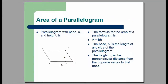The formula for the area of a parallelogram is A equals base times height, or A equals BH. The base B is the length of any side of the parallelogram. The height H is the perpendicular distance from the opposite vertex to that base — in other words, the height will form a right angle with the base.